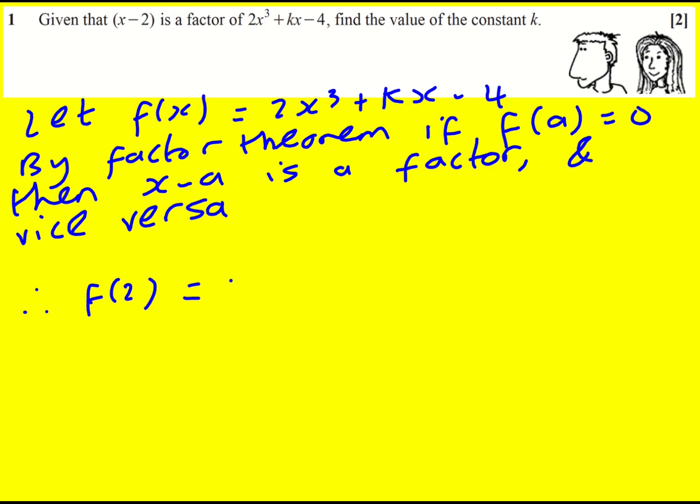We can just substitute it in. 2 times 2 cubed plus 2k minus 4 is equal to 0.